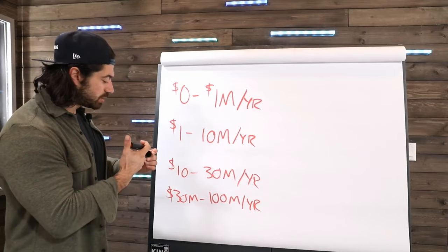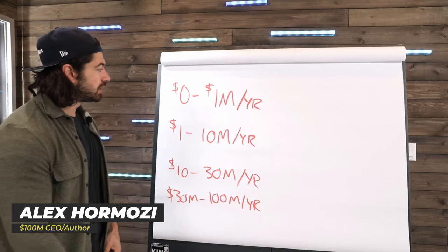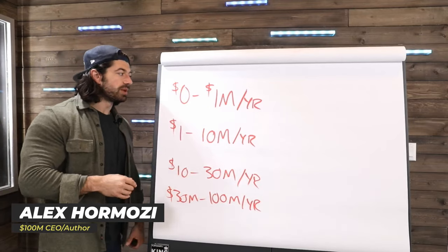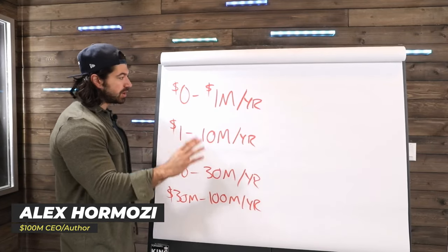What's going on, everyone? Super excited. It's Breakdown, what we're going to talk about today, which is the four big chapters in the growth of a business. So zero to a million dollars a year, one to $10 million a year, 10 to $30 million a year, and then 30 to $100 million plus.